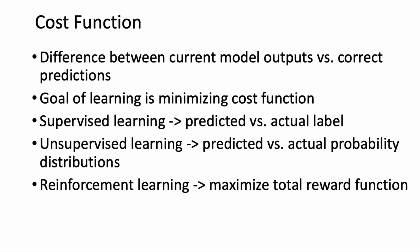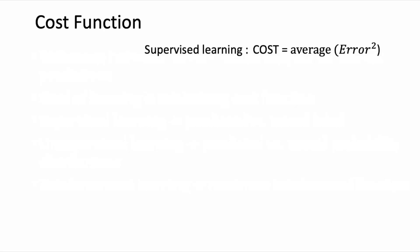There are a variety of ways to mathematically define the cost function, but they all capture the same idea of quantifying the difference between the output our model is currently giving, due to the current values of its parameters, versus the output we want the model to give, which corresponds to the parameter values we would want the model to have. A simple formula for the cost function appropriate for supervised learning problems is the average of the squared errors over all the training examples.